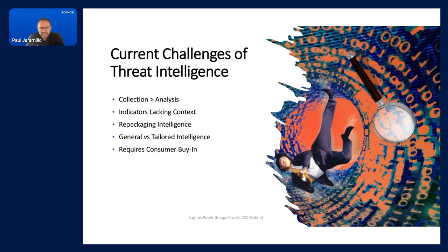Another challenge is that some less mature organizations are simply just repackaging Intel, and there's not a tremendous amount of value there. There is some awareness value with repackaging of intelligence, but at the end of the day, just subscribing to some newsletters and a feed or two could serve that function without requiring a person who is simply repackaging. That leads into the different types of intelligence: general intelligence and tailored intelligence. General is just that — intelligence applicable to any organization, potentially not specific to your sector or geography. Tailored intelligence is much more expensive and difficult to do.